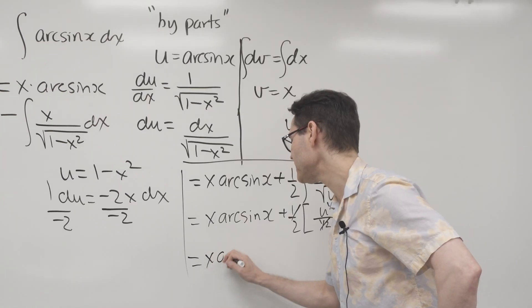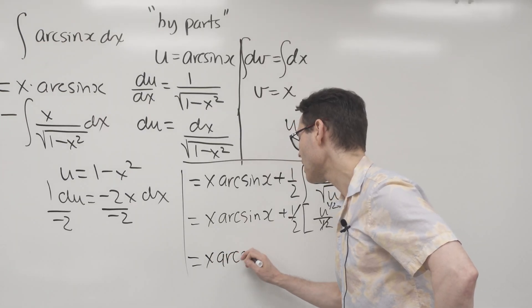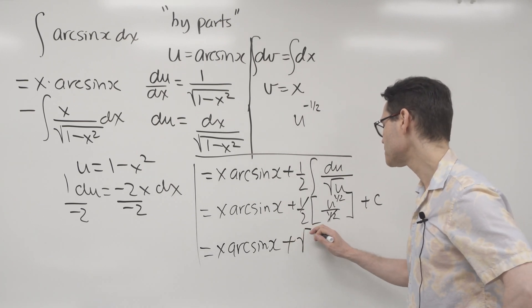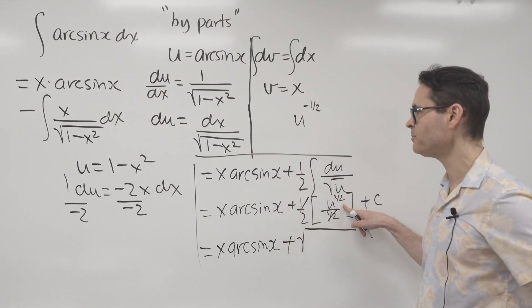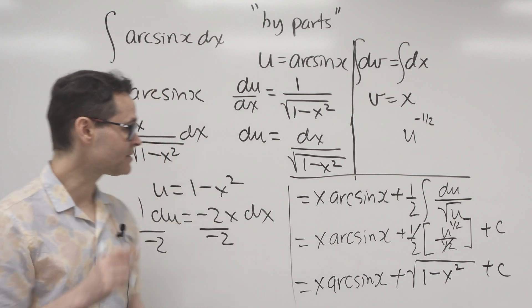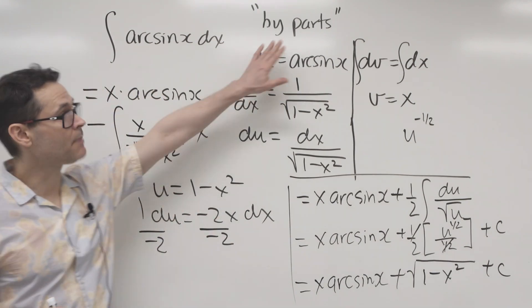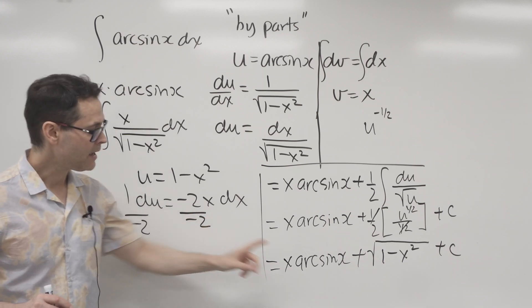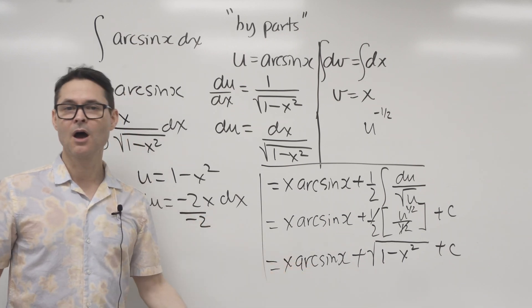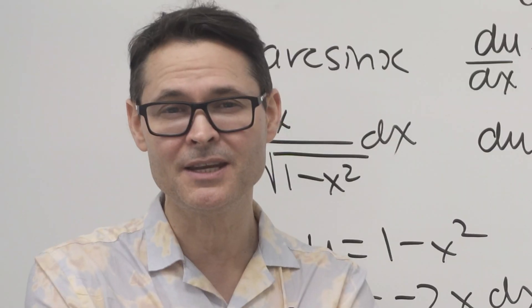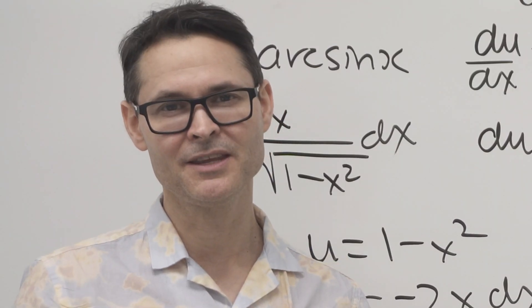So the final answer, drum roll please, is x arc sine x plus the square root, that's what a half means, of u which is 1 minus x squared plus c. And there's the final answer. And it used by parts, integration by parts, and a little quick u substitution. And we get this answer. Those are the integrals for today. Leave a comment down below. Slap a like on this video. And I'll see you back here in the next video.